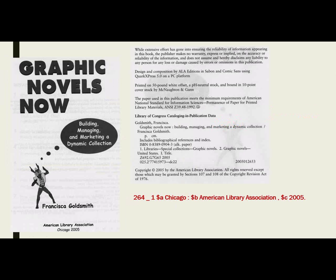A student asks about homemade family histories that are not published — should they use a zero in the 264 second indicator? Yes. If you're not seeing a publisher listed or anything that says like a manufacturer or printer, then yes, go ahead and use a zero. I have cataloged that kind of stuff. Sometimes it might say 'self-published' or 'published by the author,' in which case you would use a one. But if you're not seeing anything, assume it hasn't been published and use a zero.